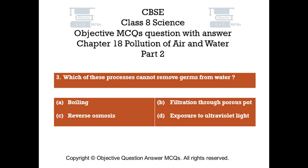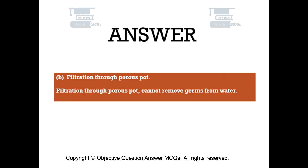Question number 3. Which of these processes cannot remove germs from water? Option A: Boiling. Option B: Filtration through porous pot. Option C: Reverse osmosis. Option D: Exposure to ultraviolet light. The right answer is Option B — Filtration through porous pot. Filtration through porous pot cannot remove germs from water.